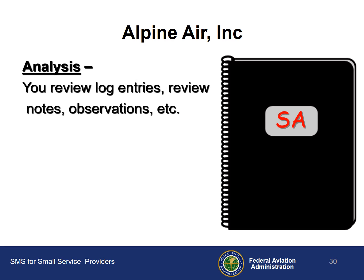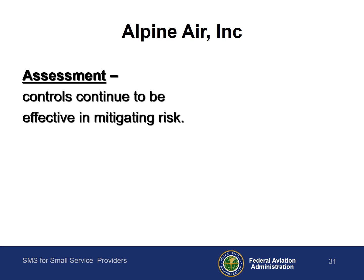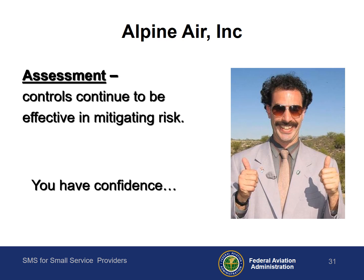Over a period of time, your analysis of the controls you have implemented to mitigate the risk of the unmarked power line justifies your assessment that your controls continue to work as expected. You can sleep better at night because you know you have documented evidence that you're identifying hazards, assessing risk, implementing controls, and monitoring controls to ensure their effectiveness. You are confident that you are exercising due diligence and have one of the safest operations on the airfield, a fact you bring up to your insurance company at policy renewal time.